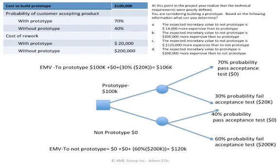The expected monetary value to not prototype would be $0 to not build the prototype, $0 if the real product passes — therefore no rework — and 60% times $200,000 to rework the real product out in the field.